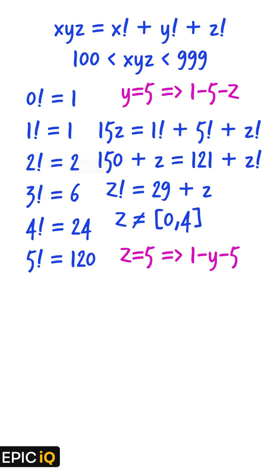Now, we consider the second possibility: 1y5. The equation will be 100 plus 10y plus 5 is equal to 1 plus y factorial plus 120.